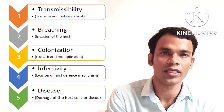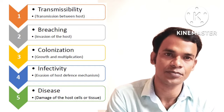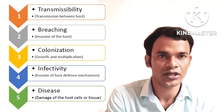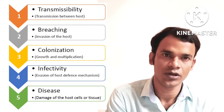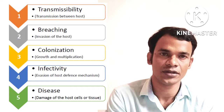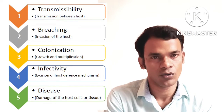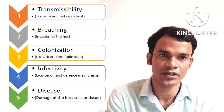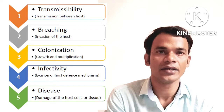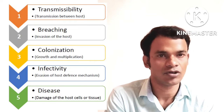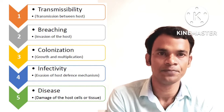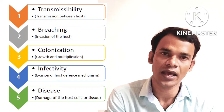The first stage is transmissibility, or transmission from one host to another. The next step is breaching or invasion of the host. After invasion, they start growing inside our body, called colonization. Then they defeat the host immune response, called infectivity. In the last stage, disease or damage occurs and signs and symptoms appear. Now let's check each step in detail and the microbial virulence associated with it.